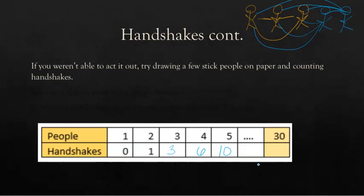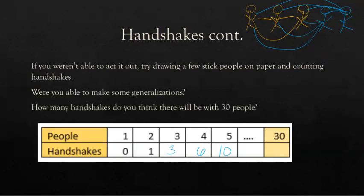How many will it take to get to 30? Are you able to make some generalizations? How many handshakes do you think there will be with 30 people? Take a second and see what you think. In this case, there's no constant rule like we've had before. If we look at the difference here, we're adding one. We're then adding two. Now we're adding three. We're adding four. Counting up like this, we can keep going and maybe make a table all the way to 30. But how do we make a rule for that? Let's see if we can do some more mathematical modeling and figure it out.